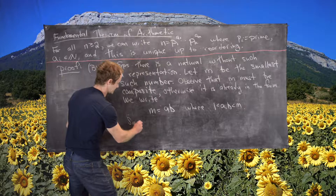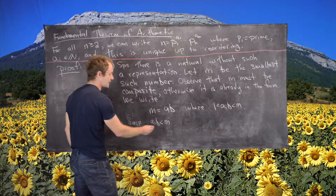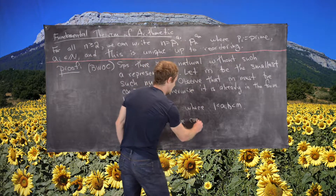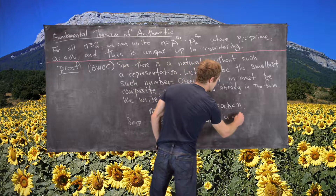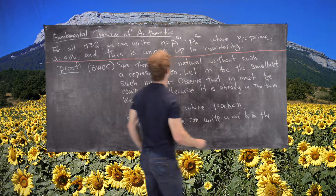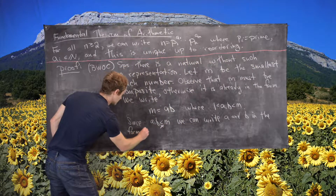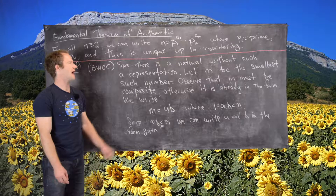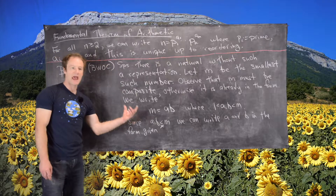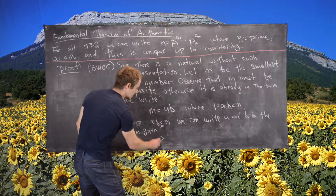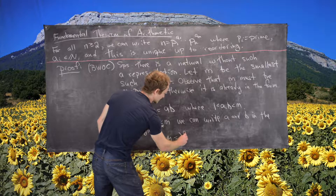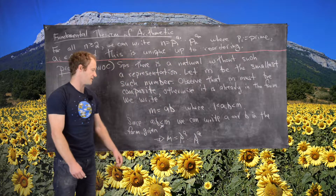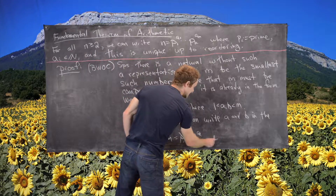Since a and b are smaller than m and not equal to m, we can write a and b in the form of a product of powers of primes. But if a and b can be written as the product of powers of primes, then a times b can, and thus m can — giving us m = p1^a1 · ... · pk^ak, where those factors are built from the representations of a and b. This is our contradiction.